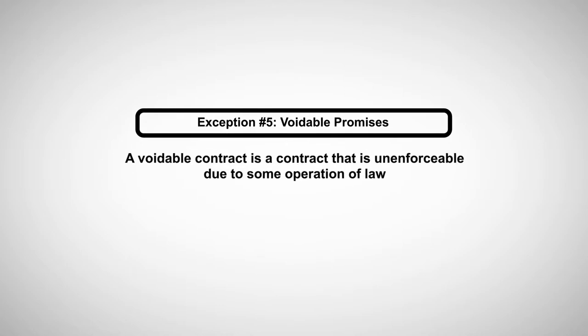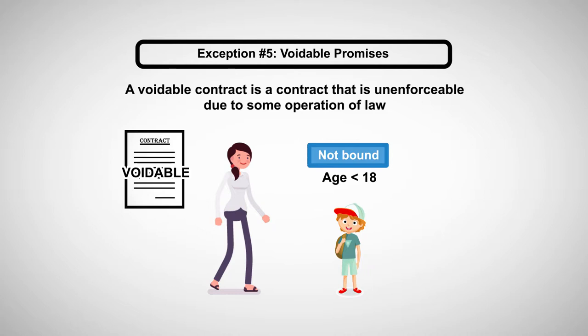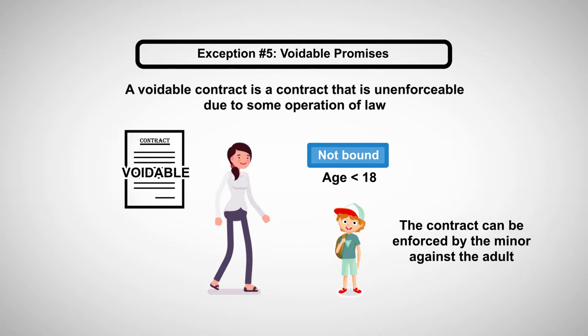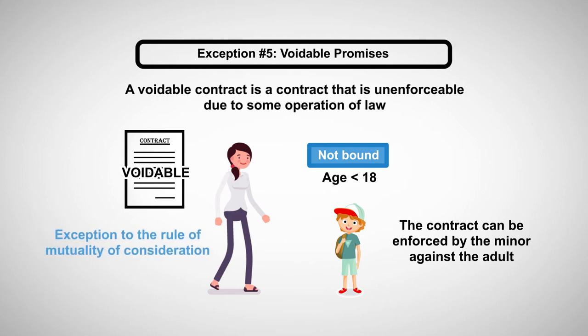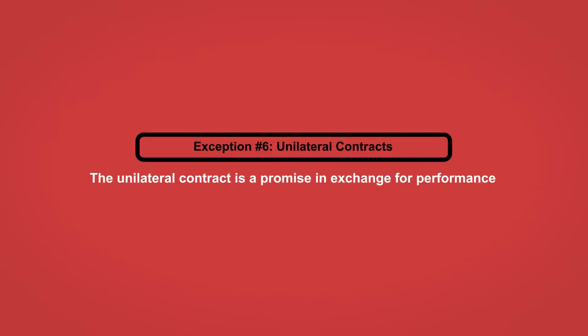Exception number five: voidable promises. A voidable contract is a contract that is unenforceable due to some operation of law. For example, most contracts between adults and minors under the age of 18 cannot be enforced by the adult against the minor — the contract is voidable because the minor is not bound. Nevertheless, the contract can be enforced by the minor against the adult, even though the minor is, due to applicable law, not bound by the agreement. This is an exception to the rule of mutuality of consideration.